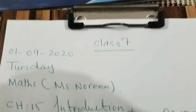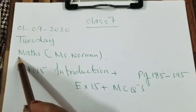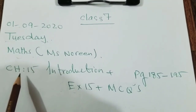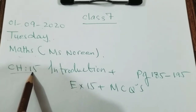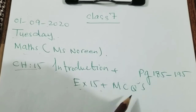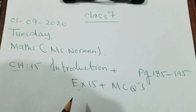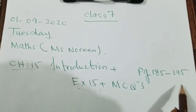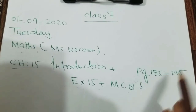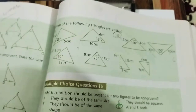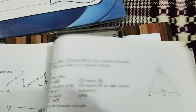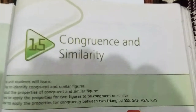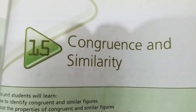Bismillah ir-Rahman ir-Rahim. Assalamu alaikum students. This is the lecture for Class 7, date 1st September 2020, Tuesday, Maths. Today we will start and also finish Chapter 15. We will do the introduction first, then exercises, then MCQs. It is a very easy and interesting chapter, covering pages 185 to 195. Chapter ka naam hai Congruence and Similarity.